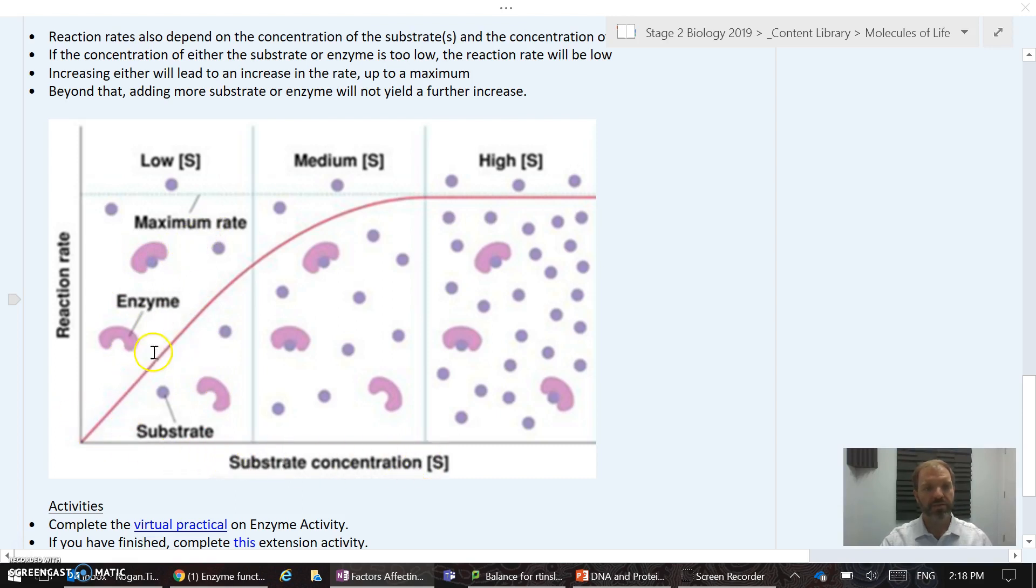As we increase our substrate concentration, the enzymes become occupied with substrate and the reaction happens maximally. We get to this point though where the reaction rate's not going up any higher because all the enzymes are working at their maximum. Adding more substrate isn't going to make that reaction go any faster. So reactions will increase with substrate concentration before reaching a threshold. A very similar graph will be shown if we kept the level of substrate the same and increased the amount of enzyme. Once you've got more enzyme than can possibly be used on that substrate, there's no point in adding any more enzyme.